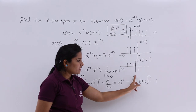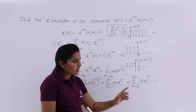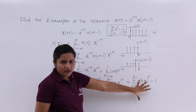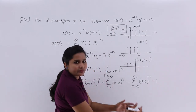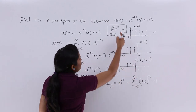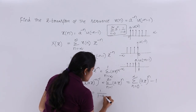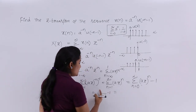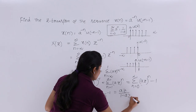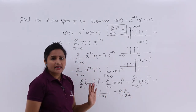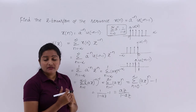So I write summation from n equals 0 to infinity of (az)^n, then subtract the n equals 0 term, which is 1. Using the fundamental formula, the summation equals 1 divided by 1 minus az, minus 1. After cross-multiplication, this gives az divided by 1 minus az. Therefore, the Z-transform of a power minus n times u of minus n minus 1 is az divided by 1 minus az.